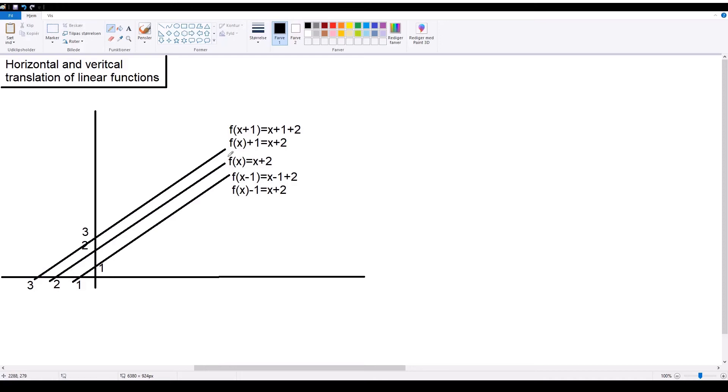So, this line, the original line, which is f of x equals x plus 2, gets moved 1 unit to the left, which equals this line. The same thing happens if you say f of x plus 1, where what happens is you essentially take the y intercept and then move it up 1.